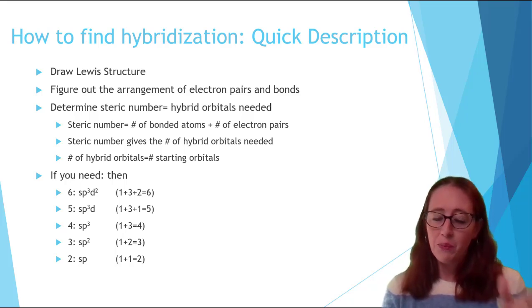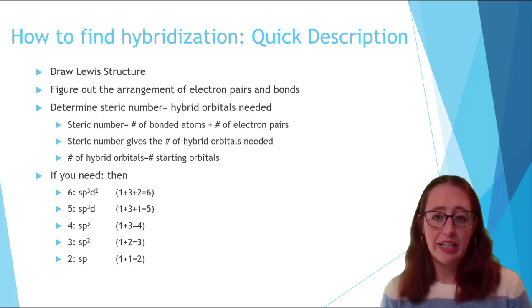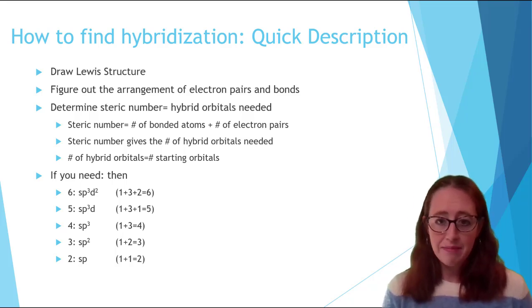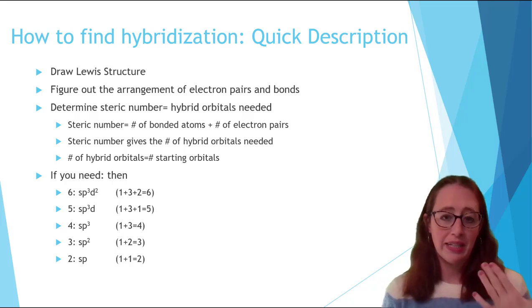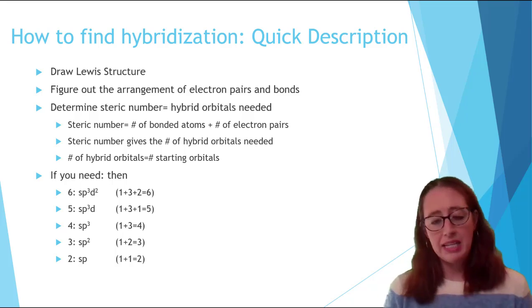Then, once you have the Lewis structure, you'll determine the steric number. You do this by counting the number of bonded atoms and lone pairs. It doesn't matter if it's a single or a double bond. It still counts as one when we're talking about steric numbers. And the lone pair of electrons also counts as one. Even though it's a pair, it just gets one spot, and so it counts as one. This is the same as how we did steric number when we talked about VSEPR.